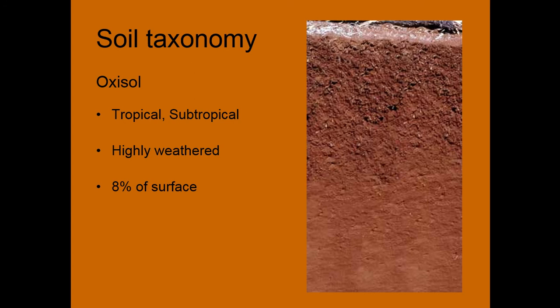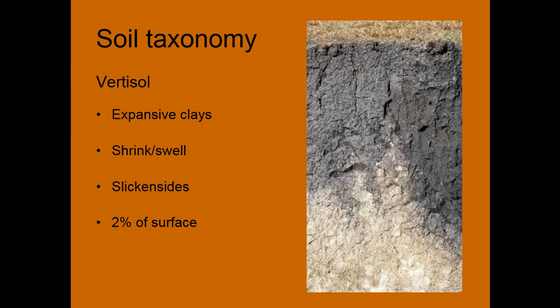Oxisols are found in tropical and subtropical areas. These are really red — sort of like a typical rainforest soil that you see in pictures. They're red because they're highly weathered, so that's clay content and iron left over in the soil, and about 8% of the soil's surface. Vertisols are expansive clays, meaning there's a high chance of shrinking and swelling based on soil moisture. This creates slickensides — a unique soil structure resulting from that clay shrinking, swelling, and sliding. About 2% of soil surface, and these can be found in Texas in the U.S., probably our best region for them.